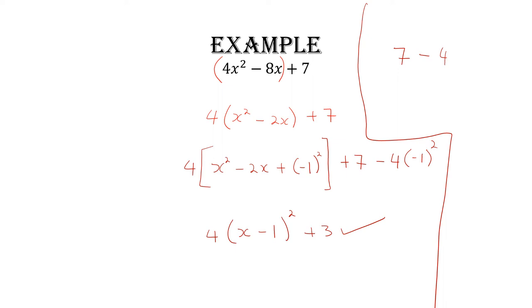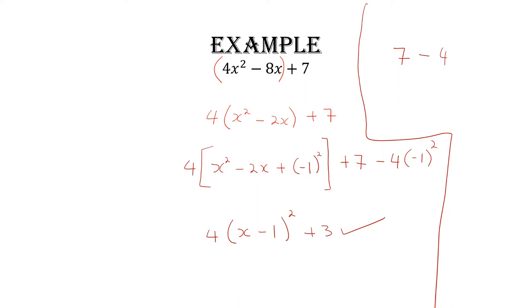So on the inside we will have four times (x minus one) all squared. To find what goes inside, all you need is to remember what half of b was — that always goes inside. On the outside we solve: seven minus four times (negative one) squared. Negative one times negative one is positive one, times four is four, so this works out to be plus three. That's the answer.